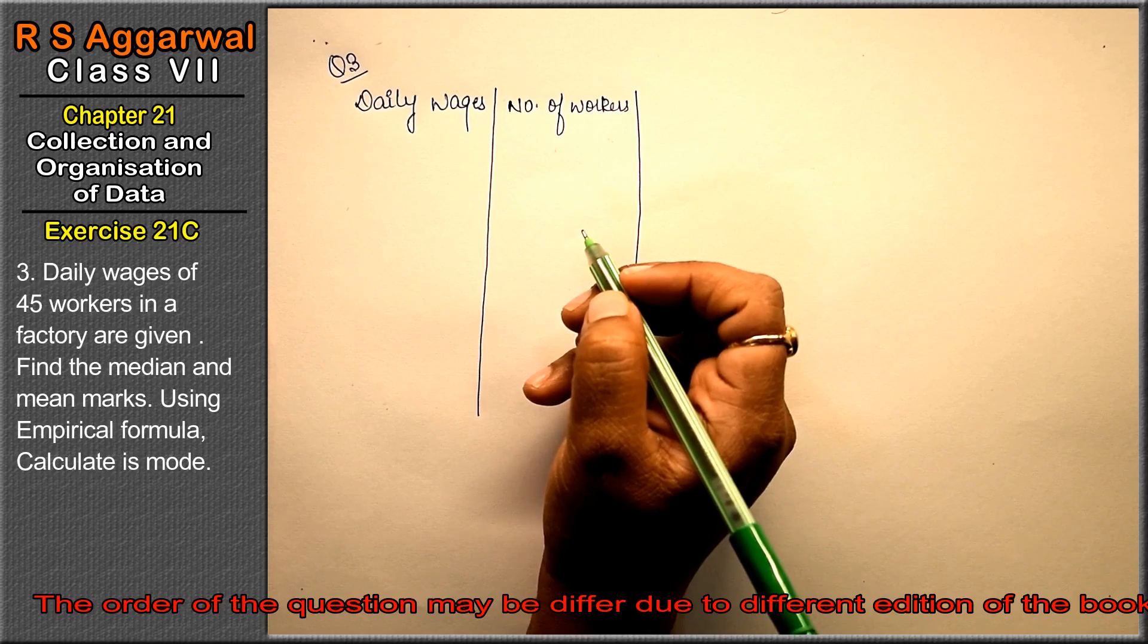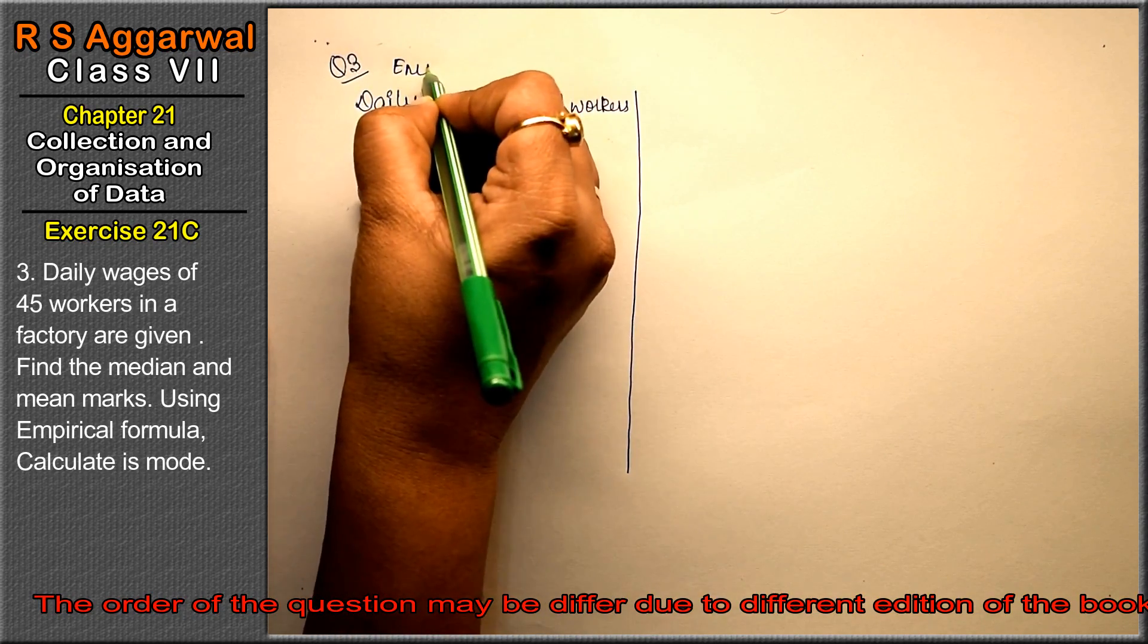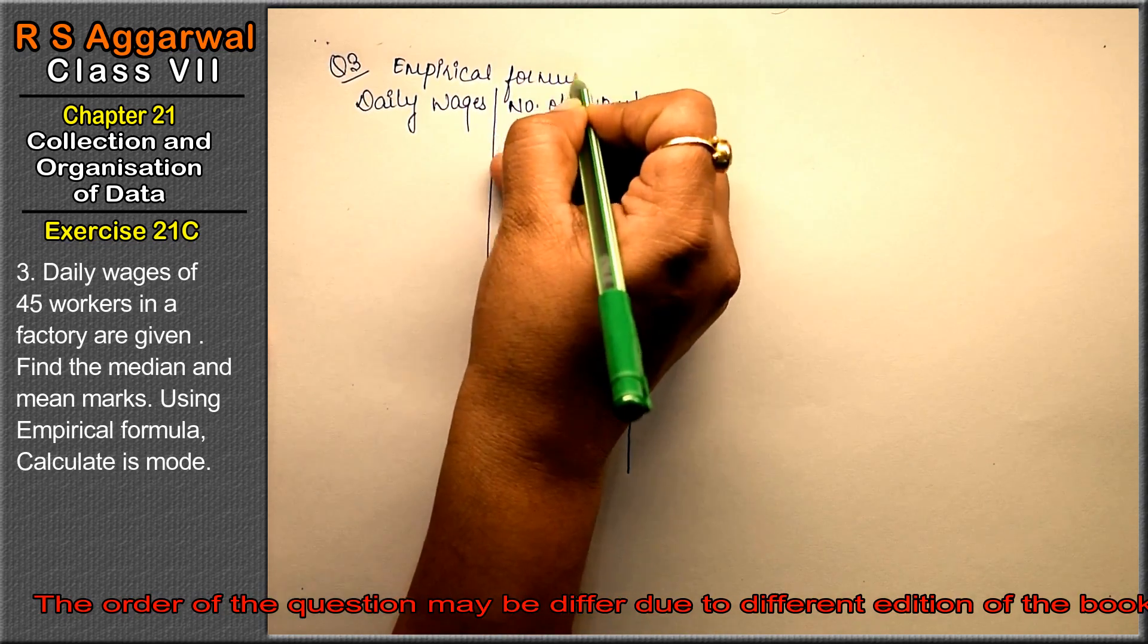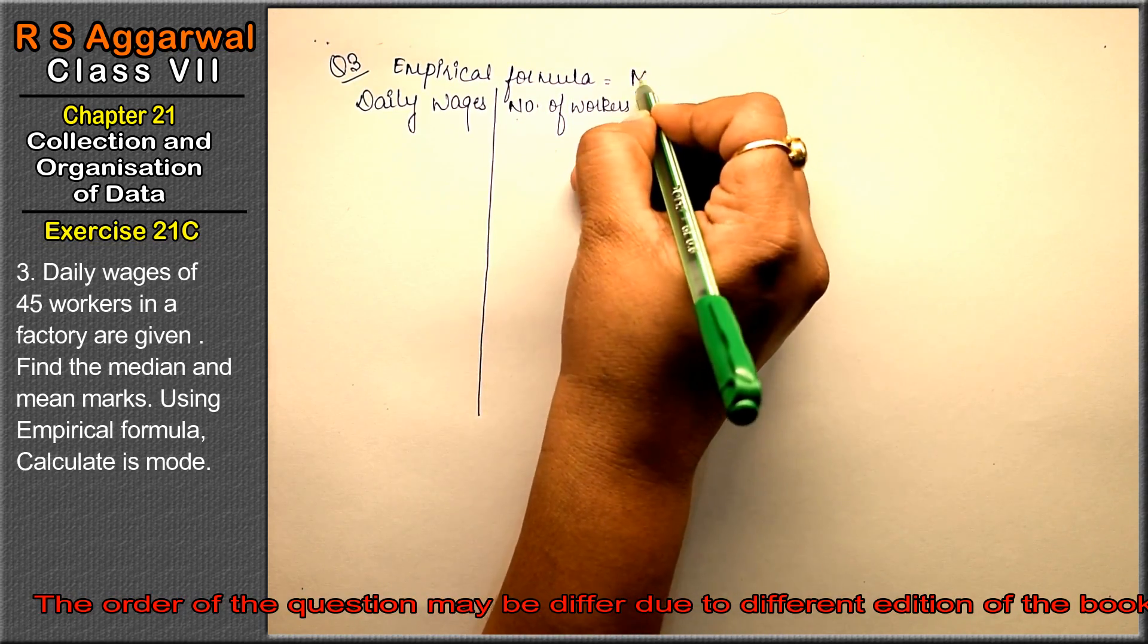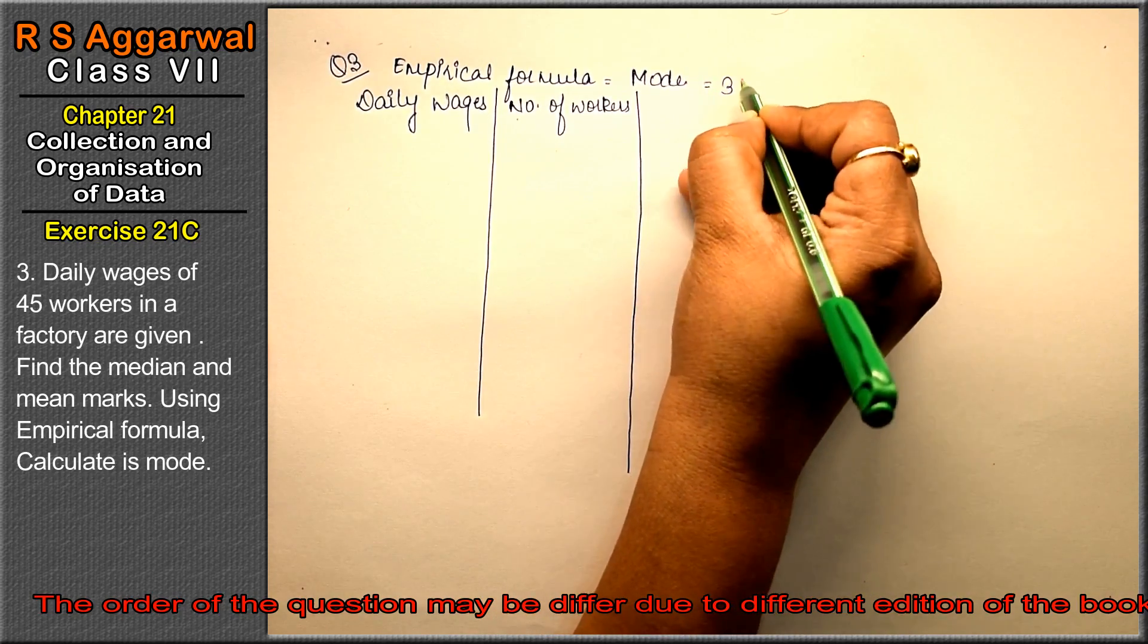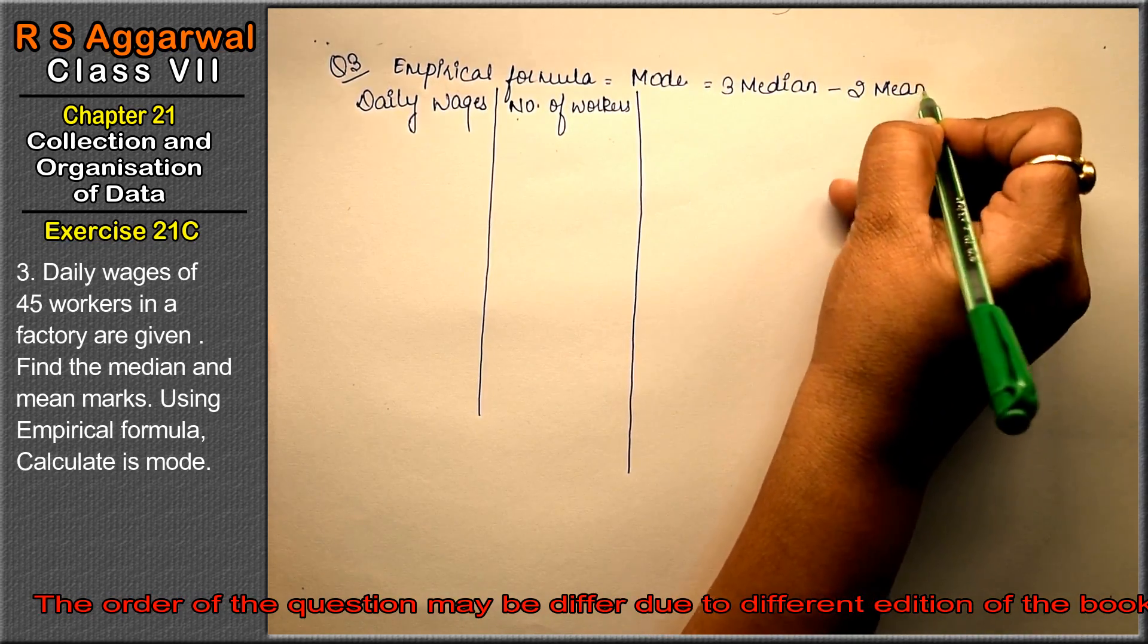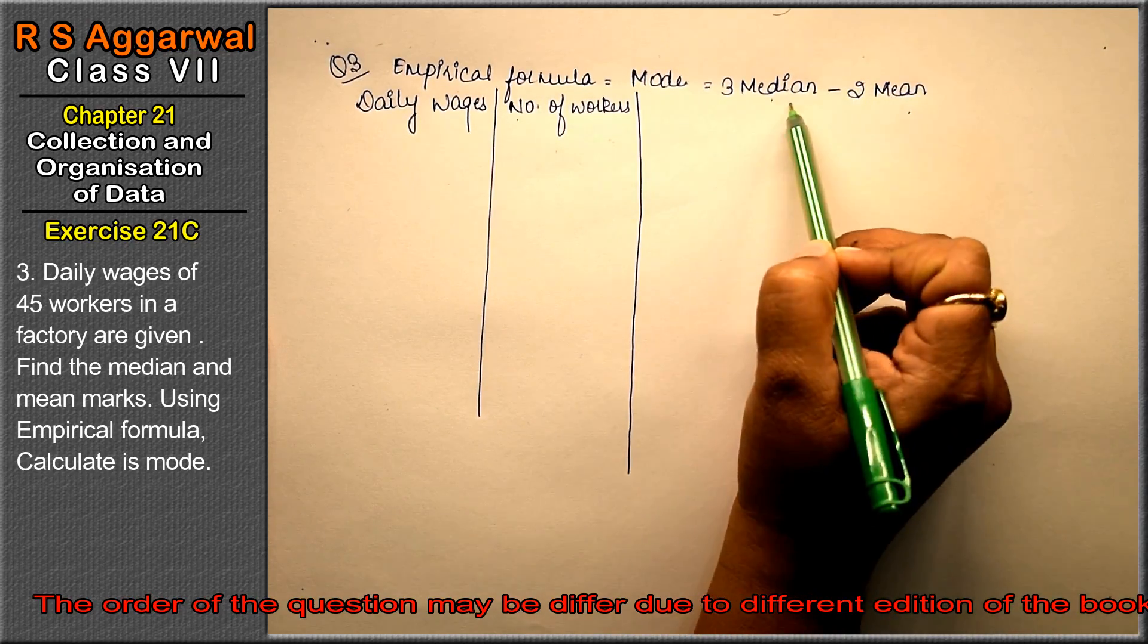Find the median and mean using empirical formula. Calculate the mode. The most important thing is the empirical formula. The empirical formula for finding mode is: Mode equals thrice of median minus twice of mean. In this formula, we will have to find all three things: mean, median, and mode.